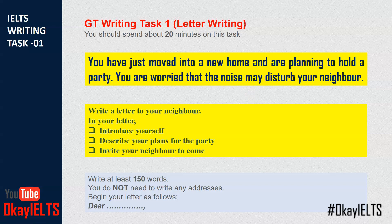Now the very first thing when talking about IELTS writing task 1 is to identify the category. As you know, there are three different categories of letter writing: formal, semi-formal, and informal. If you are writing to your family or friend, that comes under informal letters. But here in this question, we are not talking about family or friends, so this task does not belong to informal. If you're writing to someone you have never met and don't know the name, that is a formal letter. But here you are writing to a neighbor, so you likely know who they are — it falls under semi-formal letter.